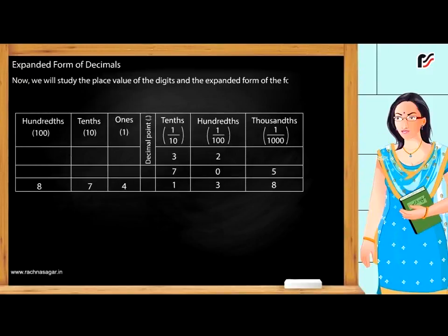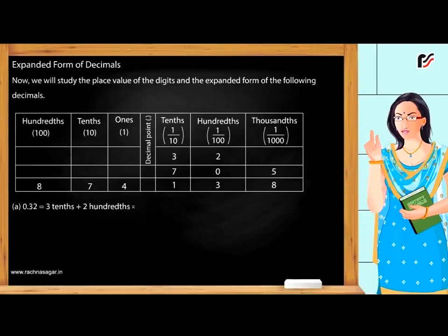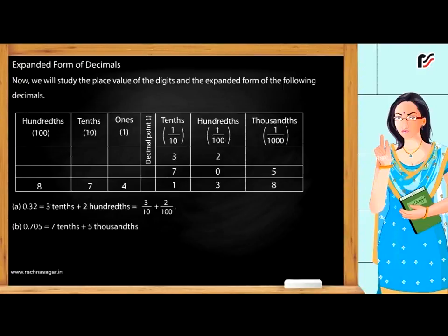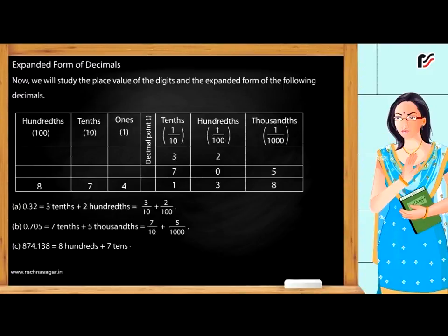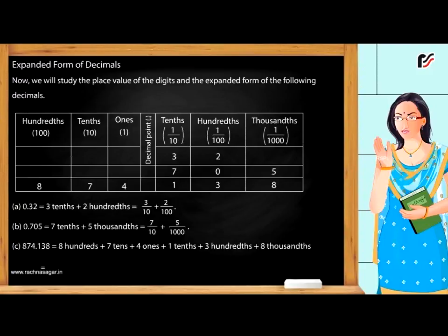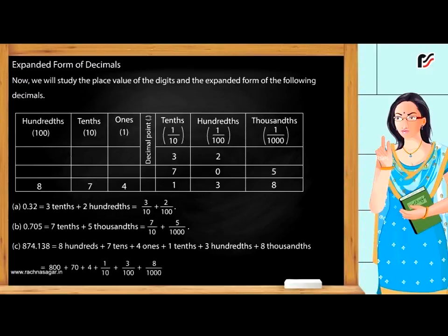Expanded form of decimals. 0.32 = 3 tenths + 2 hundredths = 3/10 + 2/100. 0.705 = 7 tenths + 5 thousandths = 7/10 + 5/1000. 874.138 = 8 hundreds + 7 tens + 4 ones + 1 tenth + 3 hundredths + 8 thousandths = 800 + 70 + 4 + 1/10 + 3/100 + 8/1000.